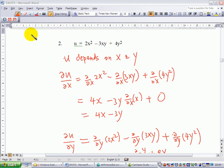Let's consider the second example. If u equals 2x squared minus 3xy plus 4y squared. So u depends on x and y.